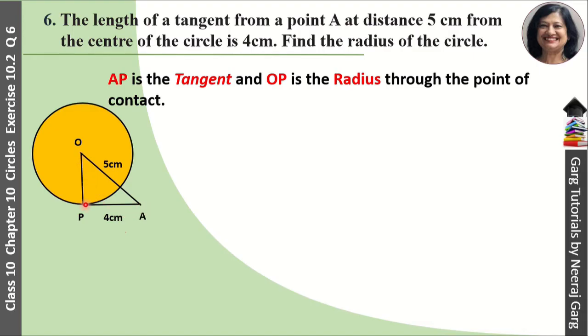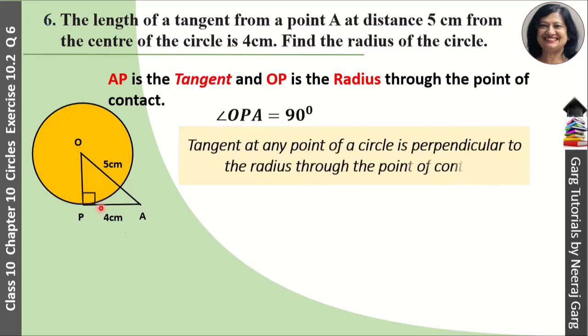Ab OP is a radius and AP is a tangent. To ye jo angle ho gaya, angle OPA ye kitna ho gaya? This is 90 degree. As we know tangent at any point of a circle is perpendicular to the radius through the point of contact.